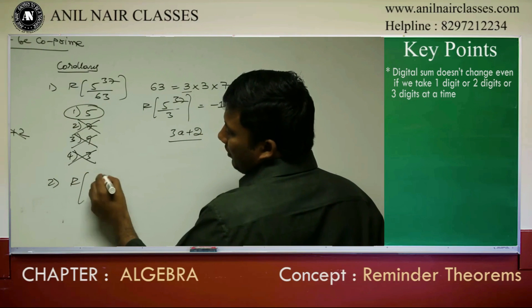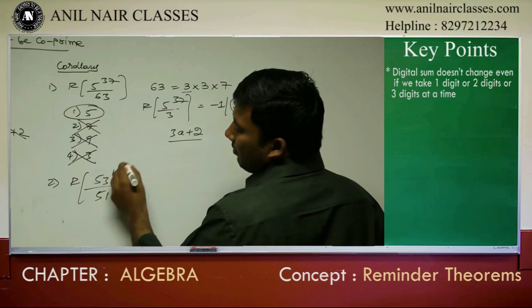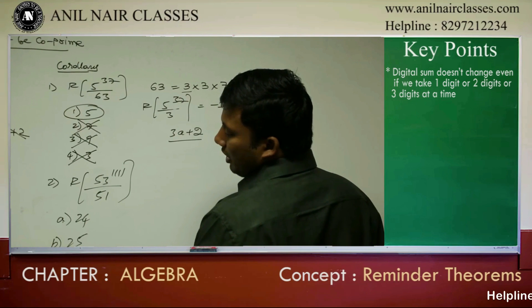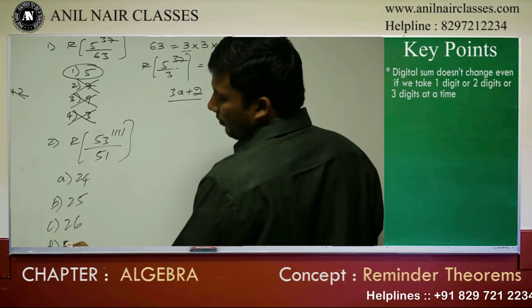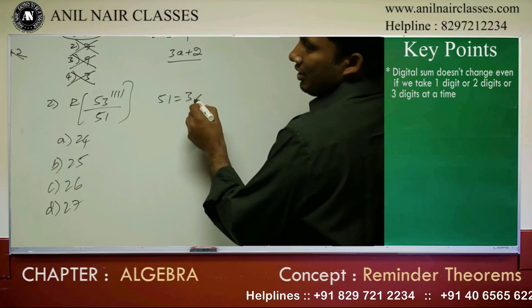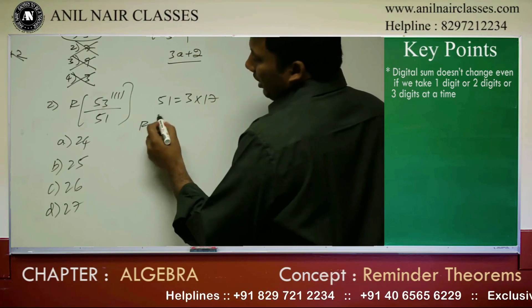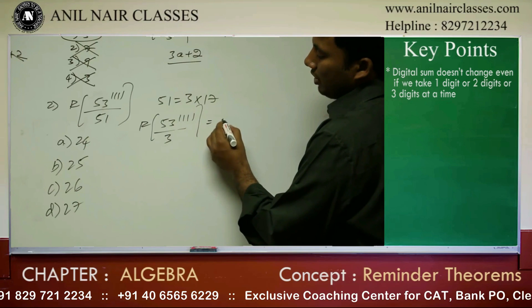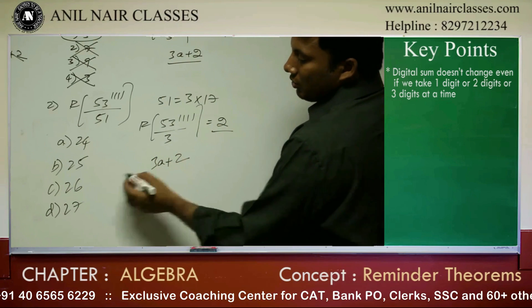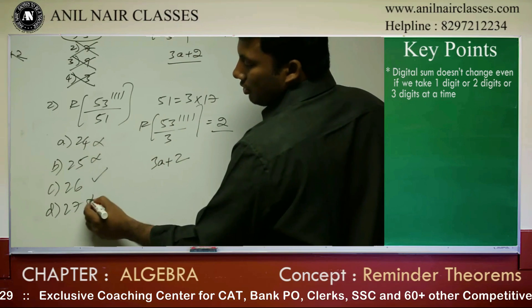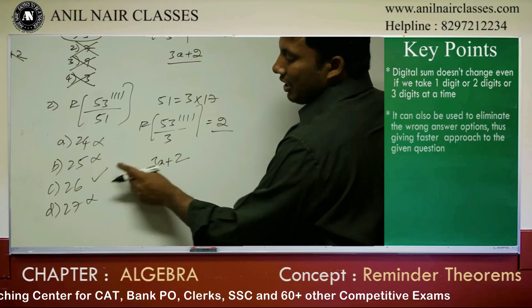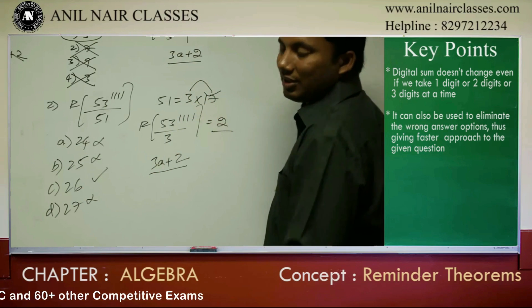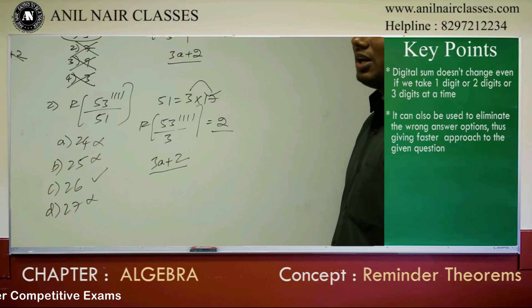Suppose: remainder of 53 power 1111 divided by 51. Options are 24, 25, 26, 27. Now 51 is 3 into 17. So, remainder of 53^1111 divided by 3: 53 is 54 minus 1, giving remainder 2. The answer should be of the form 3a plus 2. If more than one answer option is of the form 3a plus 2, after 3, the next factor is 17 — go ahead and apply the same method with 17. So, sometimes keep an eye on the answer options.